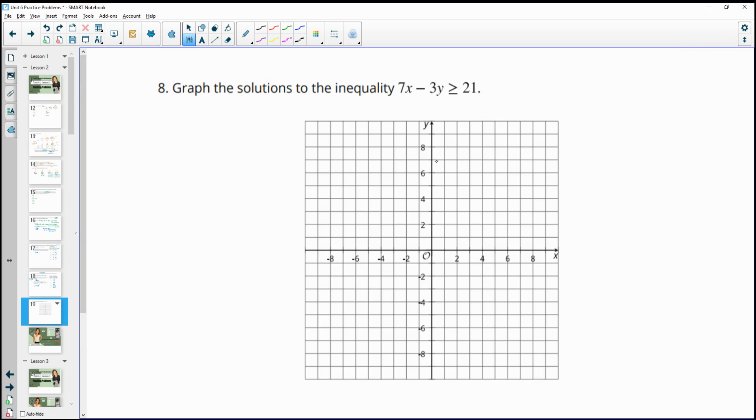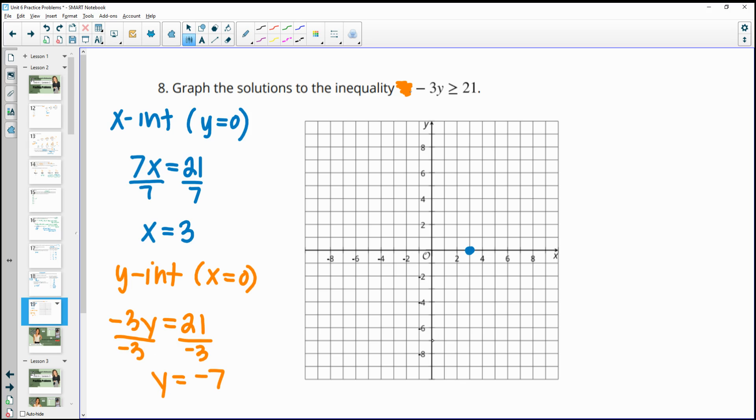Number eight, graph the solutions to this inequality. So there's multiple different ways you can do this. One of the ways is by graphing the intercepts. And so the intercepts, when we're at the x-intercept, that means that our y-coordinate is zero. So then I can just ignore that because negative three times zero is zero. So 7x equals 21 will give me my x-intercept. So we'll just divide by seven, and we get that x equals three. And then we can plot that point. Then when we go to do the y-intercept, the y-intercept is going to be when the x-coordinate is zero. So seven times zero is just zero. So then we'll look at negative three y equals 21. So we'll divide by negative three, and we get that our y-intercept is negative seven. So we'll plot that point.